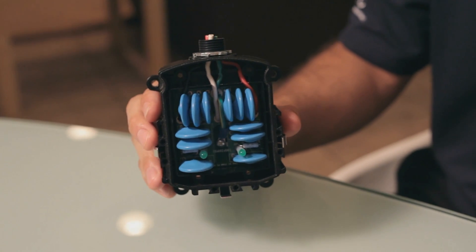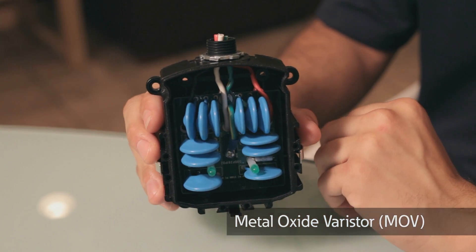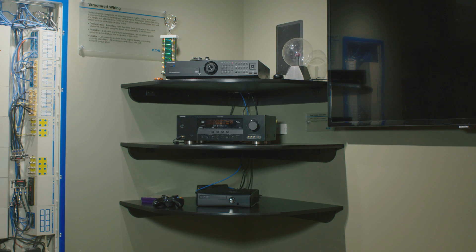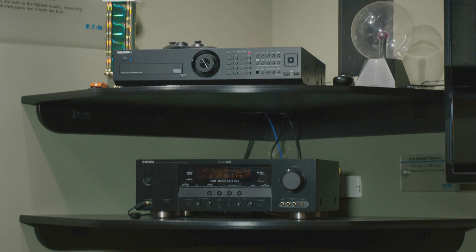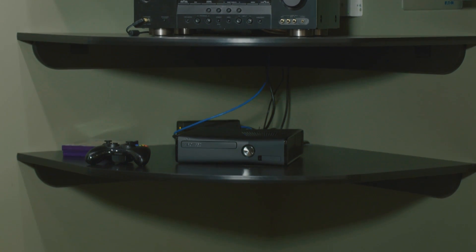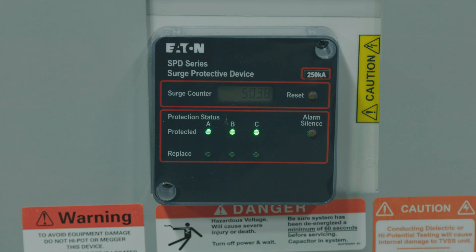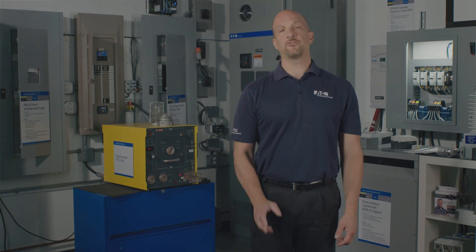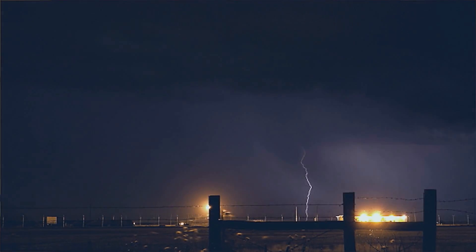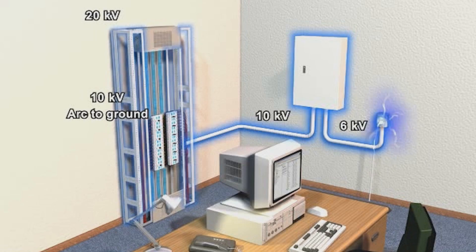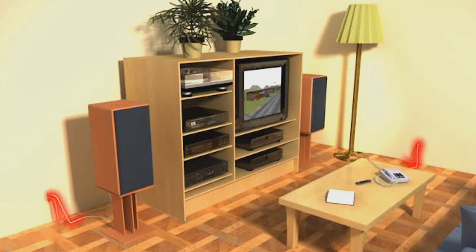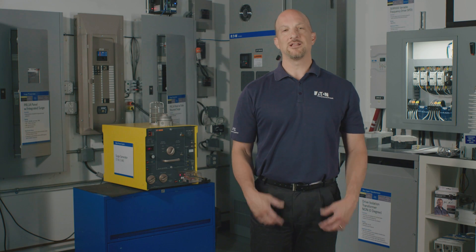The solution for transients is usually surge protection, but surge protection is an insurance policy against that lightning strike that might happen or that utility switching event that could occur, so oftentimes we go without protection. Today we live in a throwaway world — if you buy a $60 DVD player, you aren't going to fix it for $100. Surge protection offers a great insurance policy for the thousands of dollars of electronics in our homes and businesses. Multiple levels of protection are often required because transients may come in from outside, like lightning, or from loads like your garage door opener or AC unit.